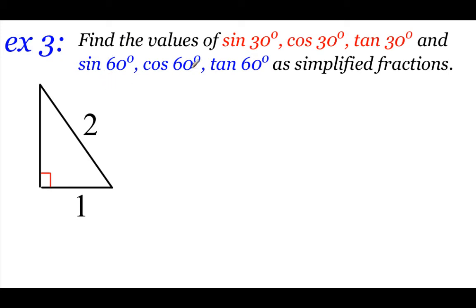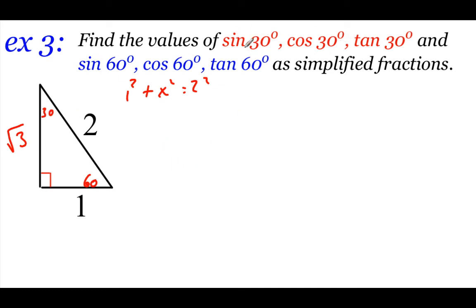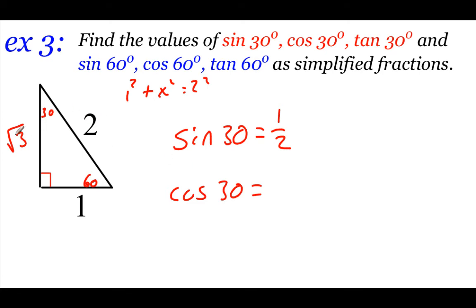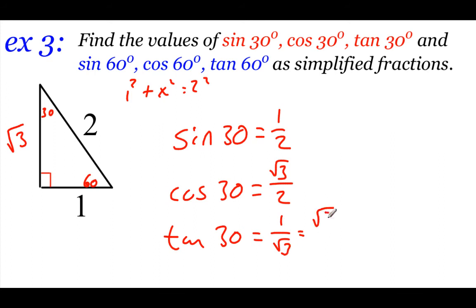The next triangle is a 30-60-90 triangle. The top angle is 30° and the bottom right is 60°. Using 1² + x² = 2² to find the missing side, we get x = √3. For the 30° angle: sine of 30° is opposite over hypotenuse = 1/2. Cosine of 30° is adjacent over hypotenuse = √3/2. Tangent of 30° is opposite over adjacent = 1/√3, which we rationalize by multiplying by √3/√3 to get √3/3.